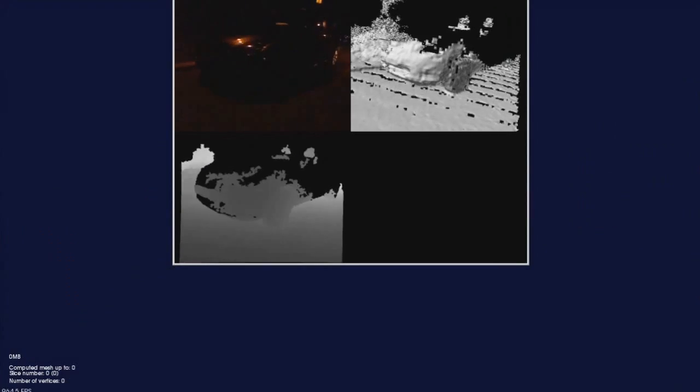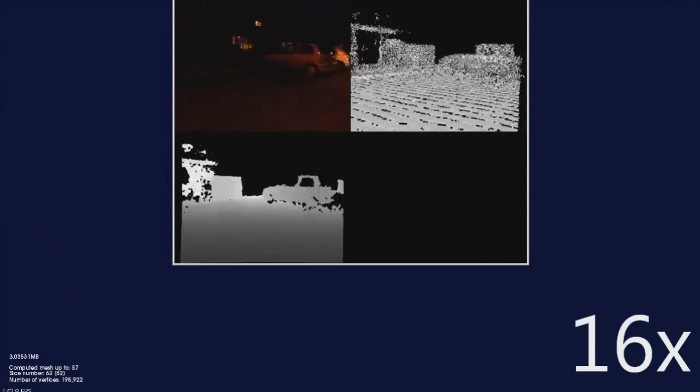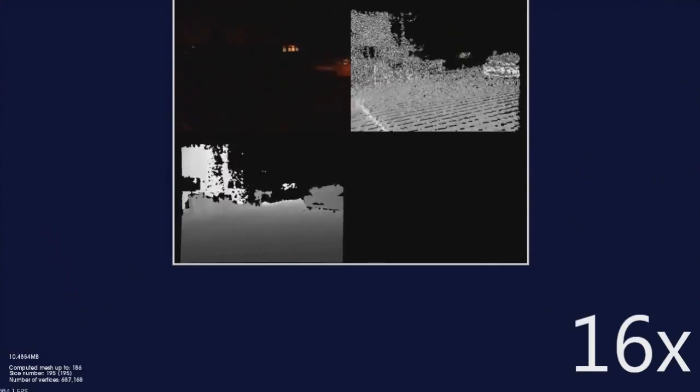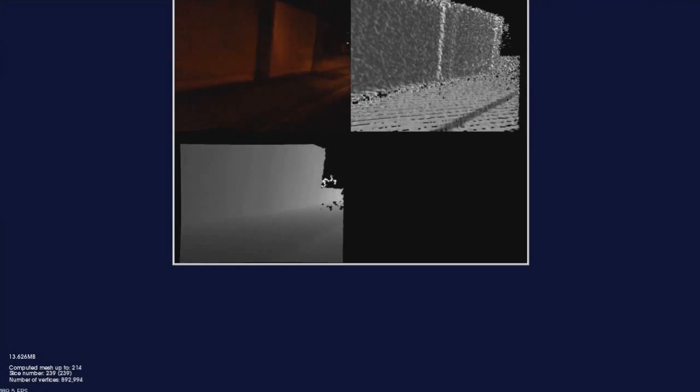RGBD cameras typically only operate indoors. However, in this sequence we see how they can be used outdoors during night time. The sequence was captured from the passenger window of a car over an extended distance in a suburban housing estate.